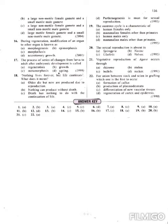Question 18: nothing lives forever, but life continues — what does this mean? The meaning is: older organisms die but new ones are produced due to reproduction. All organisms have the ability to reproduce their own copies. The continuity of generations occurs through the process of reproduction.